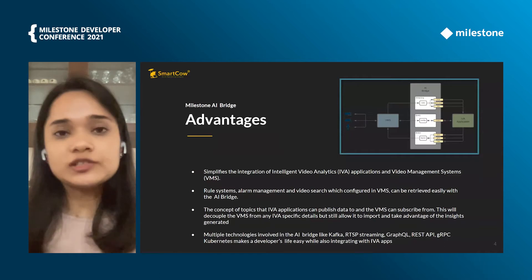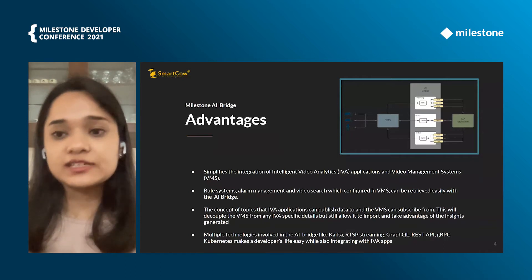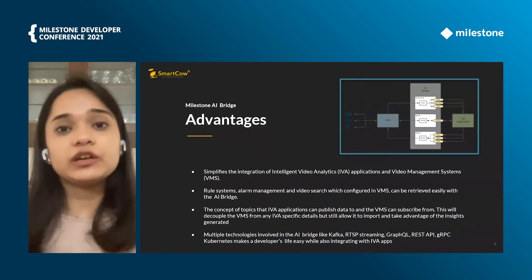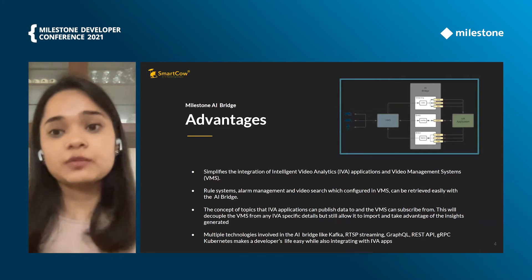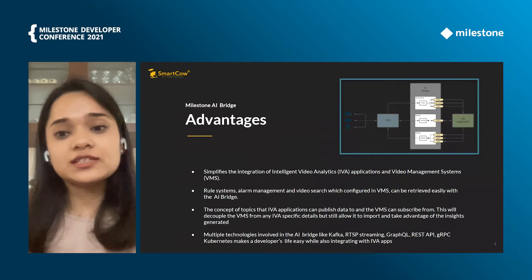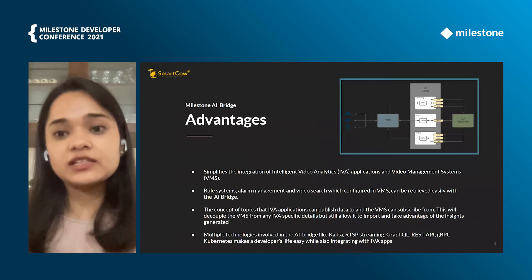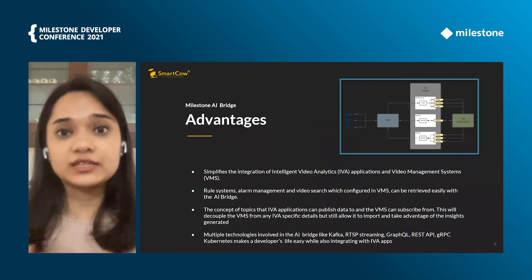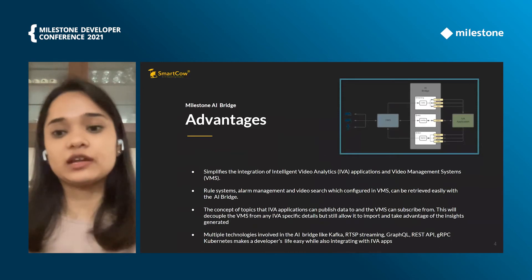Firstly, the rule systems, alarms, and video search are easily retrievable through the AI Bridge from the VMS. The use of Kafka topics enables any intelligent video analytics application to publish data, from where the VMS can then subscribe. This kind of decouples the VMS from any IVA-specific details, but still allows you to take advantage of the insights that are generated from your video analytics application.